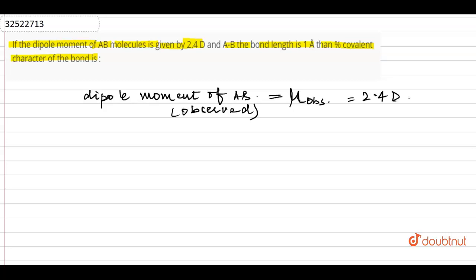Now, the AB bond length is equal to 1 angstrom.